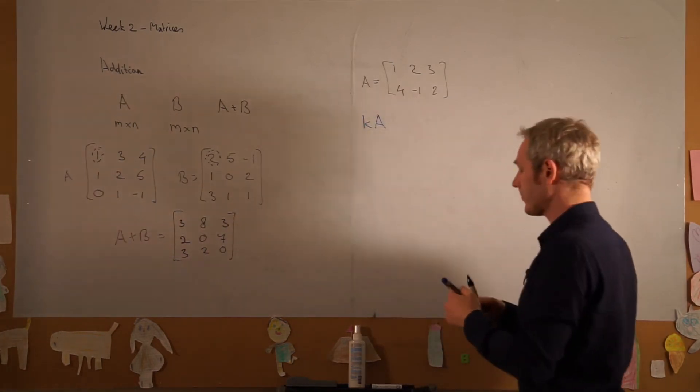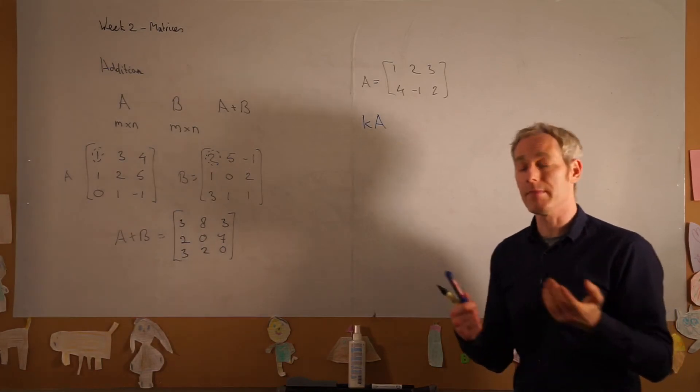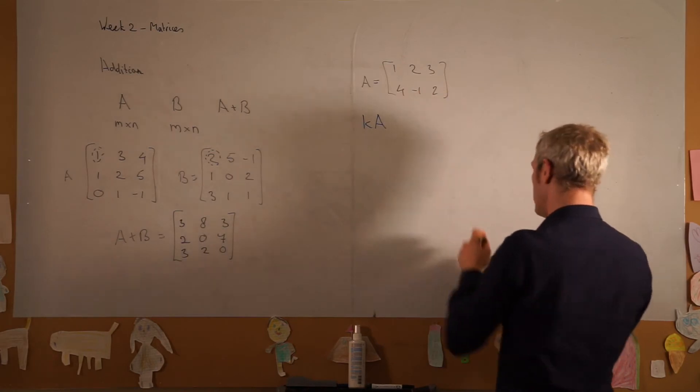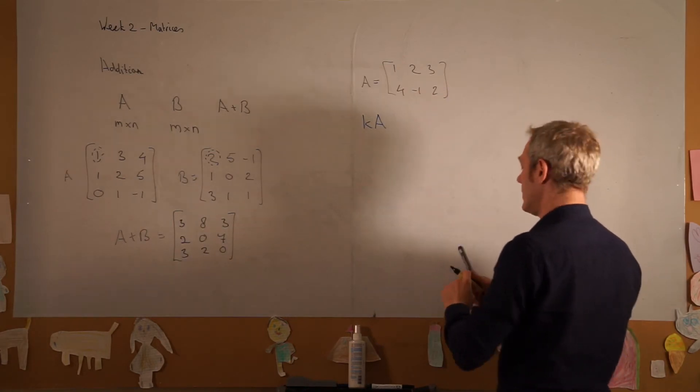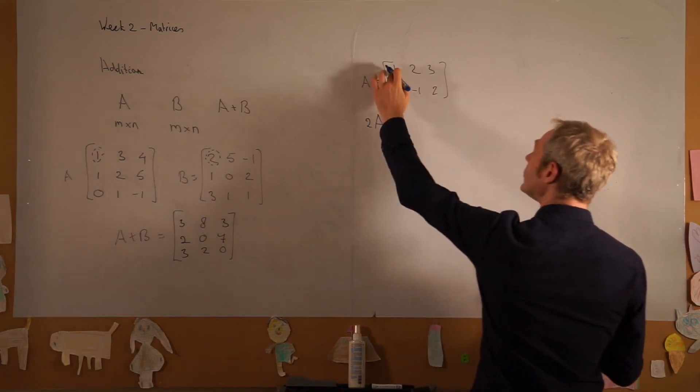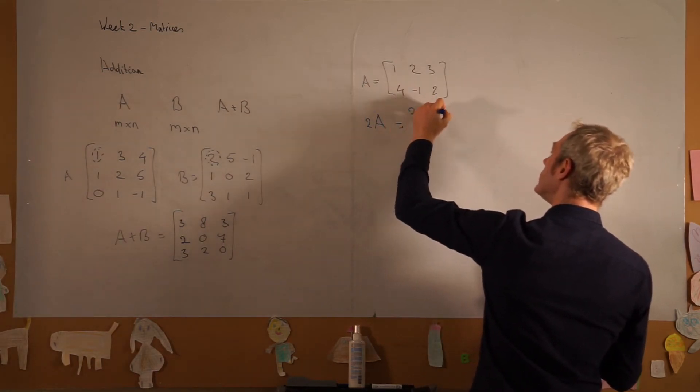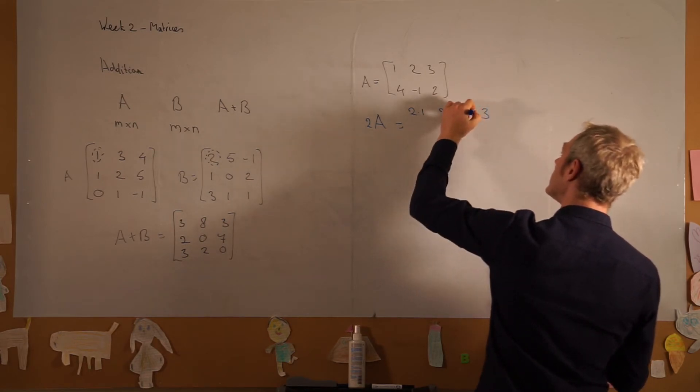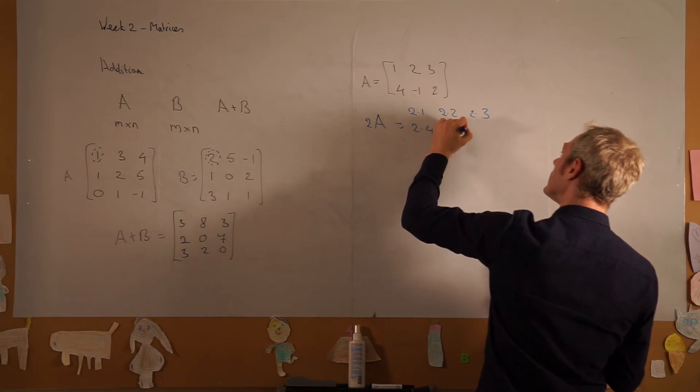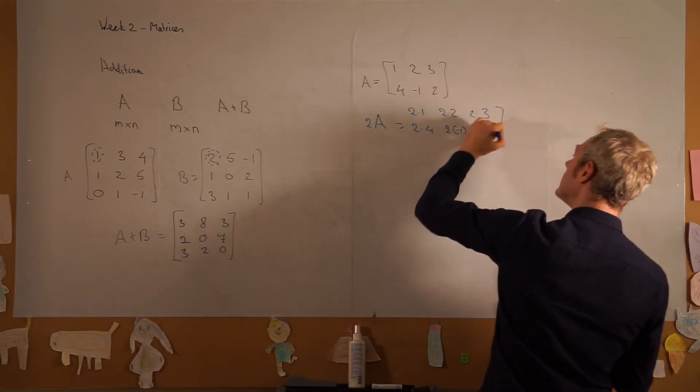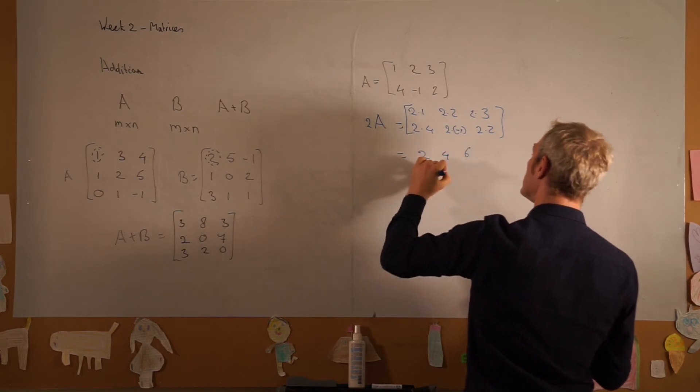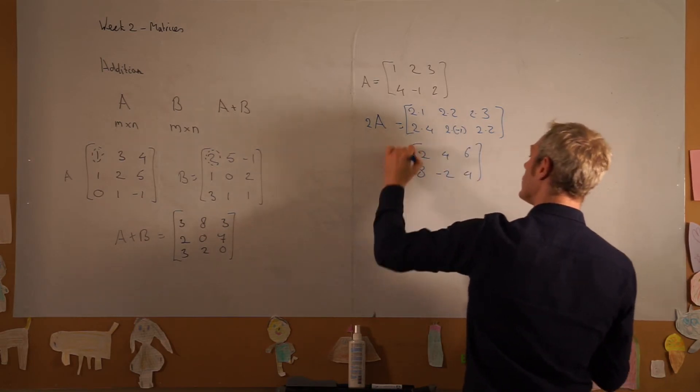So we can determine k·A, and multiplying a matrix by a constant is nothing other than multiplying each element by that constant. So if I wanted to calculate 2 times A, then we get 2 times 1, 2 times 2, 2 times 3, 2 times 4, 2 times -1, and 2 times 2. And if we calculate that, that will be 2, 4, 6, 8, -2, and 4.